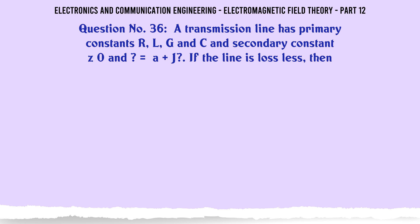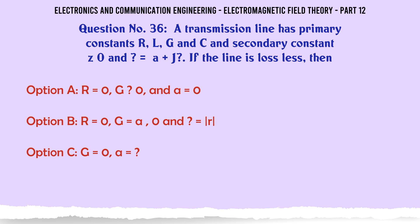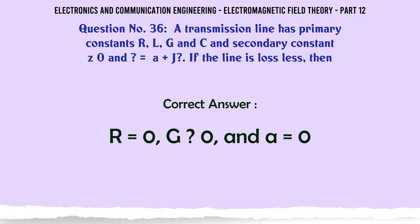A transmission line has primary constants R, L, G and C, and secondary constants Z₀ and γ. If the line is lossless then: A. R=0, G=0, and α=0, B. R=0, G=α=0, C. G=0, α=0, D. R=0, G=0, α=0. The correct answer is R=0, G=0, and α=0.